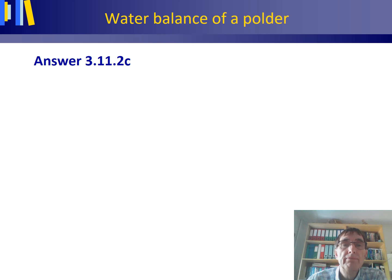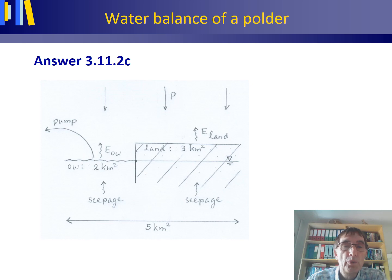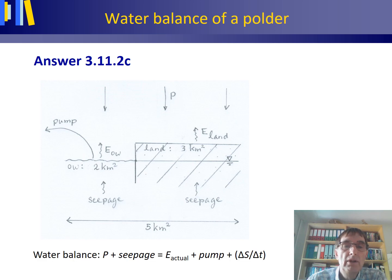How do we go about solving this? First of all, draw a cross section of the polder. To the left we see the open water and the open water level; to the right we see the land and the water table. The open water level and the water table are the same. Incoming is precipitation and upward seepage from the groundwater. Outgoing is the open water evaporation from the land and the water which is pumped out. So our water balance equation reads: precipitation plus seepage equals the actual evaporation — made up of open water evaporation and land evaporation — plus what is pumped out.